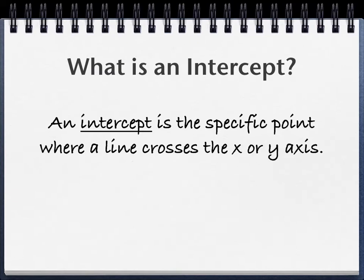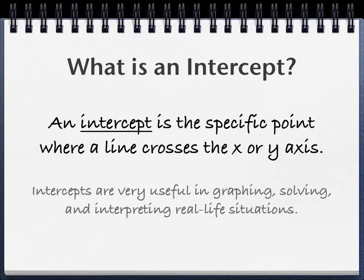And you may be thinking, why is that so important? Well, when we use these equations to model real-life situations, those intercepts have a lot of meaning. So when we look at a real-life situation, the intercepts are generally an important piece of information for us. And they're also pretty easy to calculate. So it's an easy way to find points on a graph and get them graphed. Tomorrow we're going to focus more on graphing with intercepts, and you're going to see that that's going to make things a lot easier.